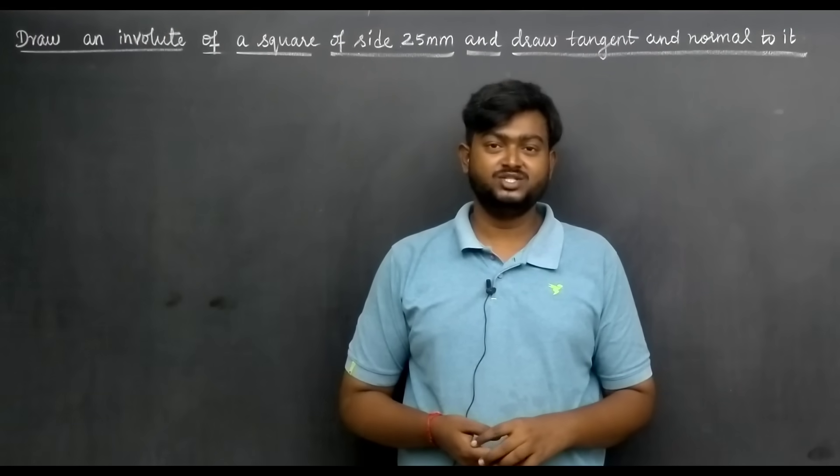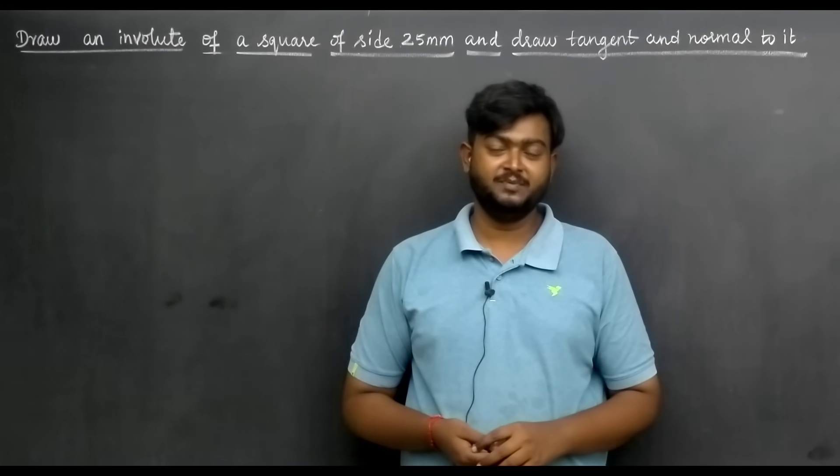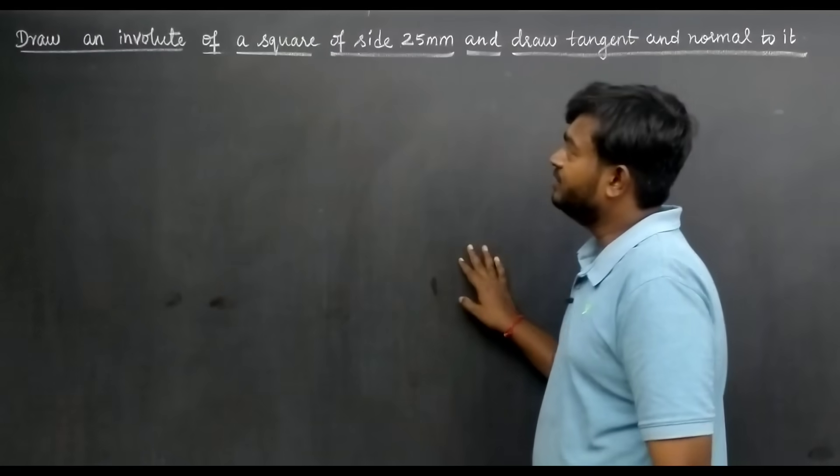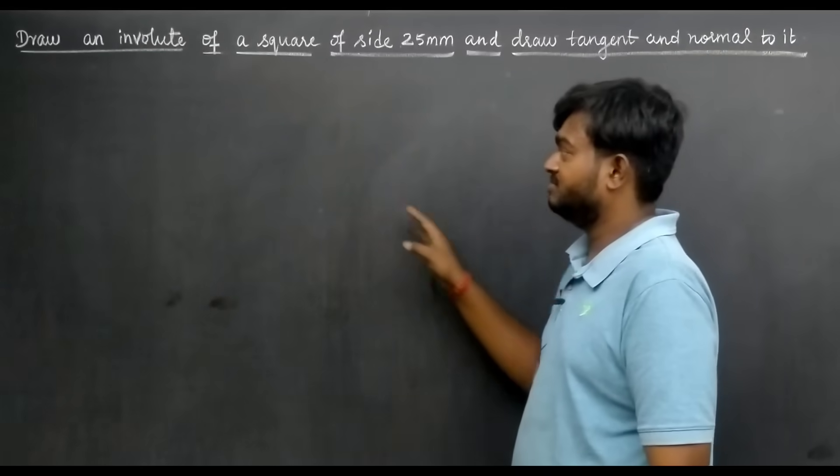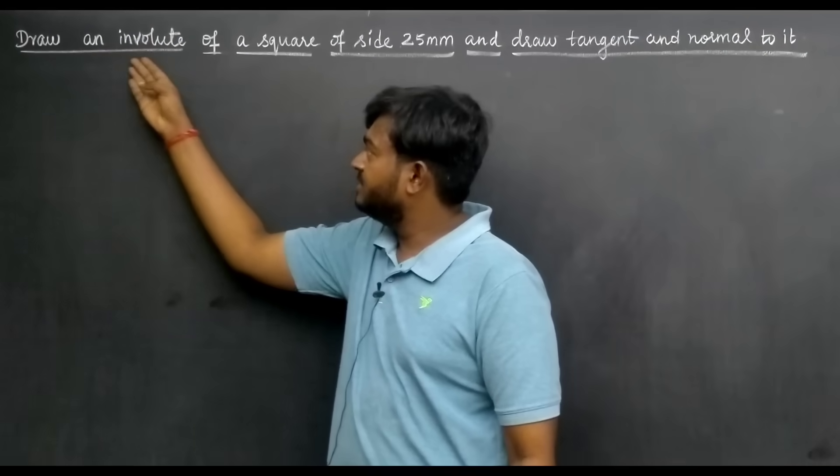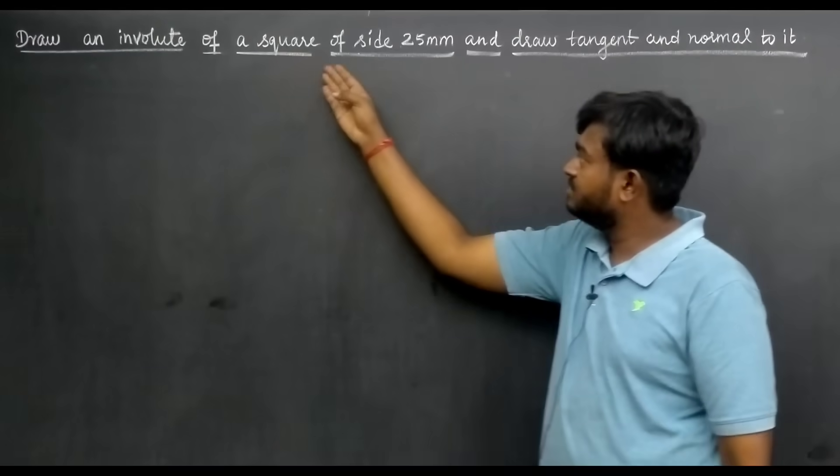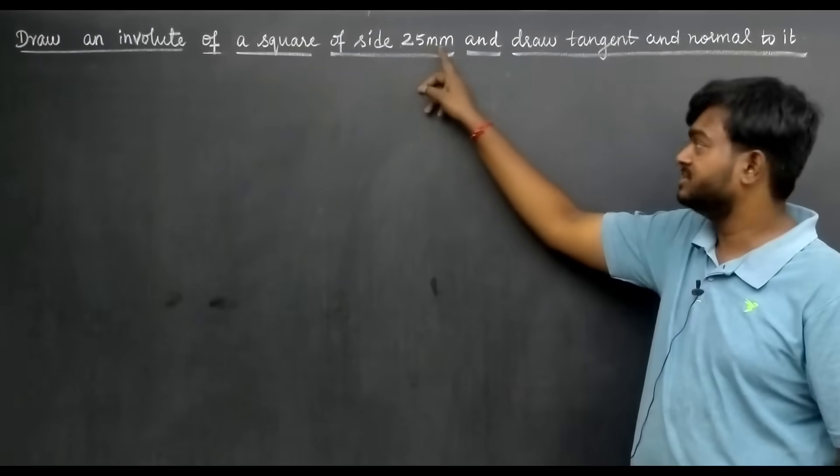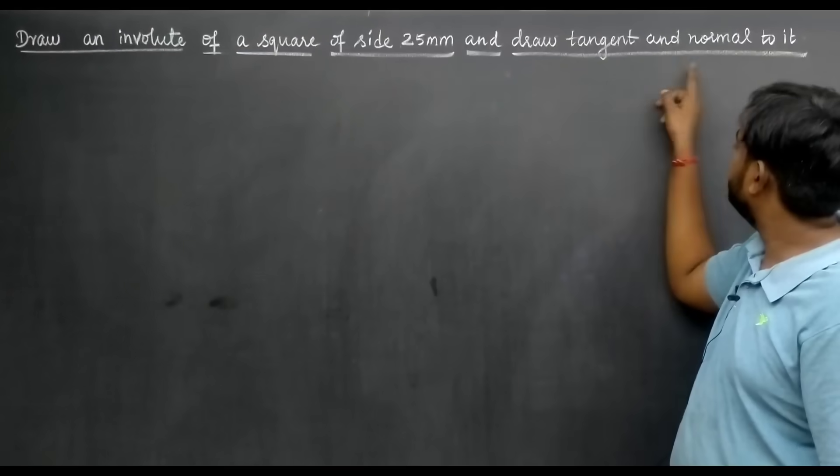Hi students, this is Dhili Raja, welcome to 4G Silver Academy Tamil. In this video, we will learn to draw an involute of a square of side 25mm, that means 2.5 centimeter, and draw tangent and normal to it.